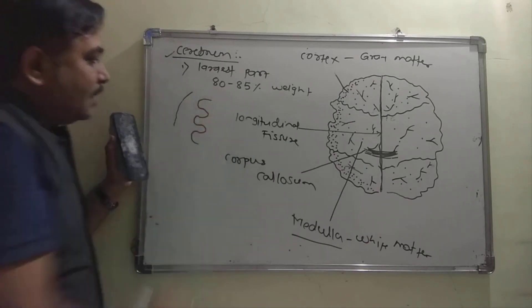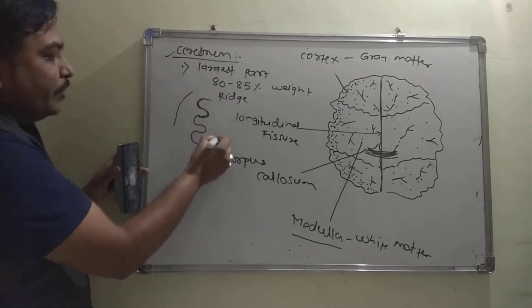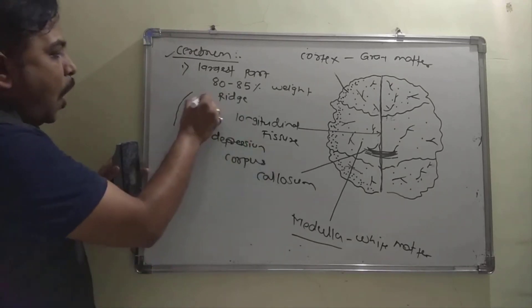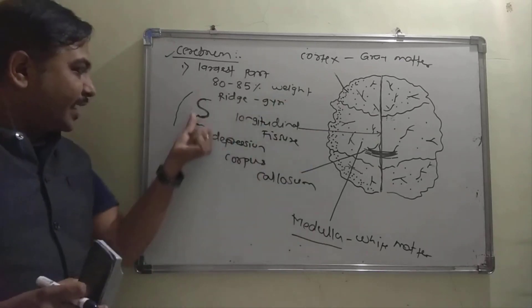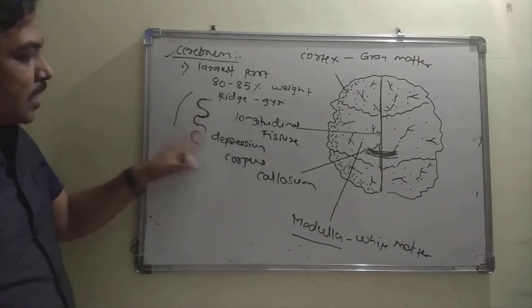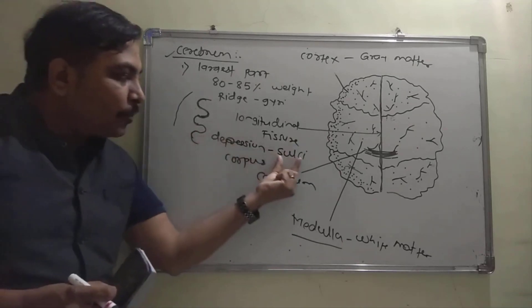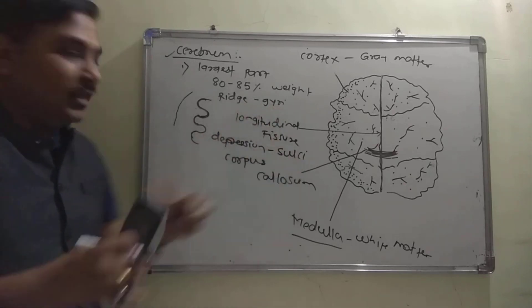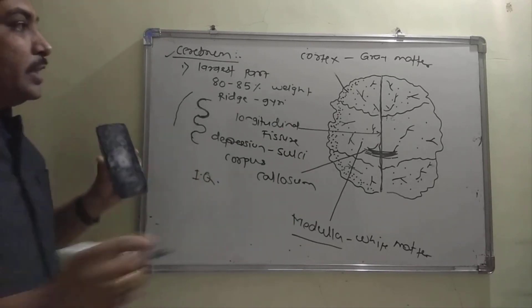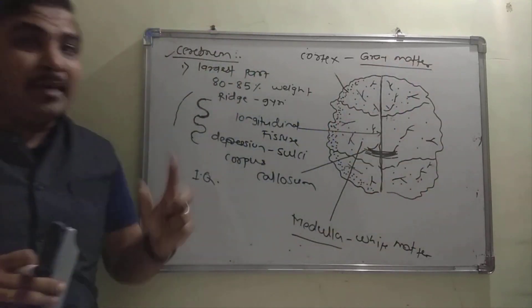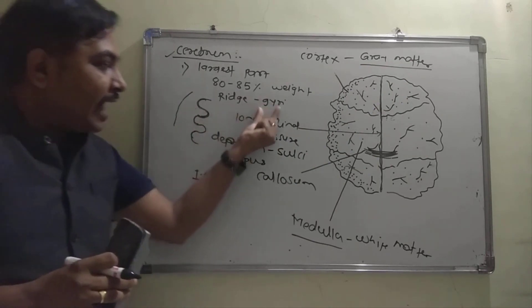These foldings include ridges and depressions. The ridges are called gyri (singular: gyrus), and the depressions are called sulci (singular: sulcus). These gyri and sulci are directly related to the degree of intelligence or IQ of a person. The more grey matter, the more foldings, and the more gyri and sulci, potentially a higher IQ.